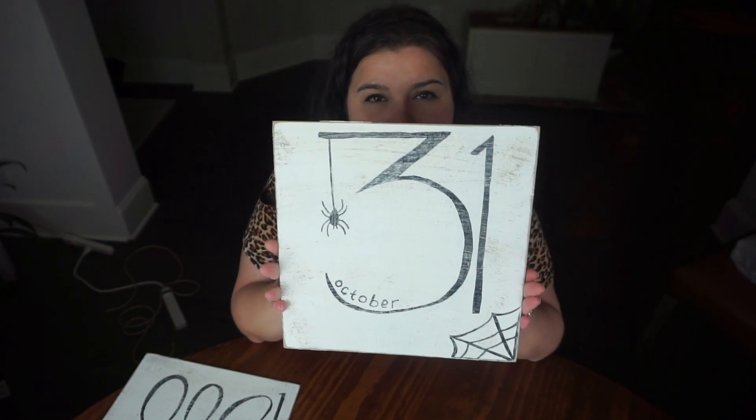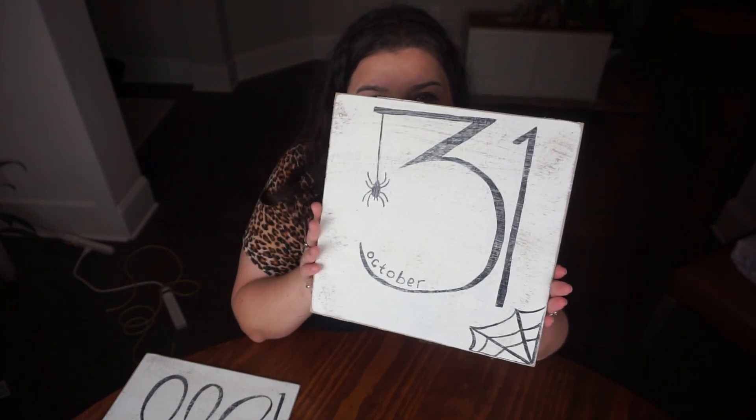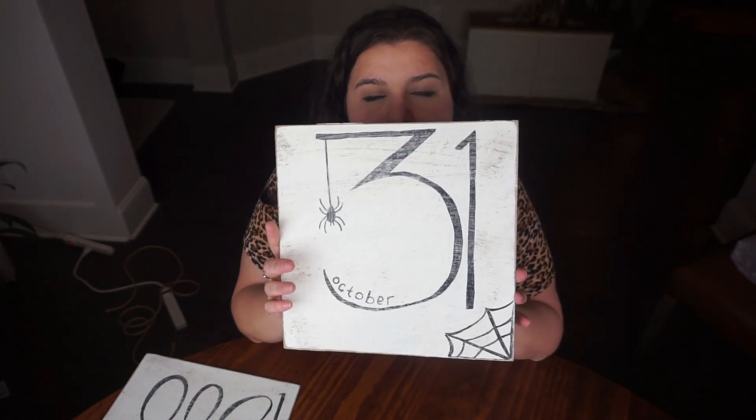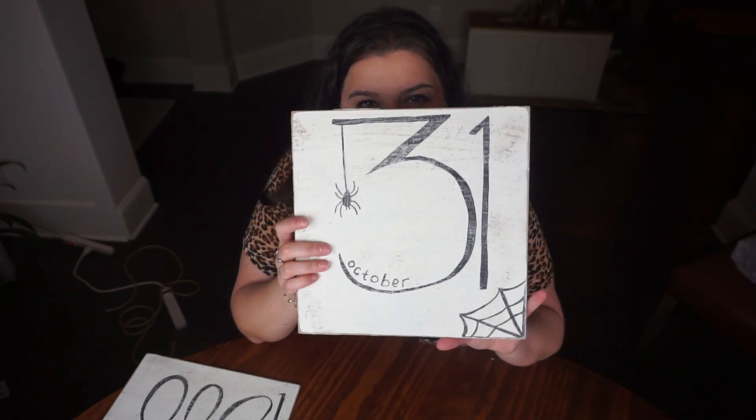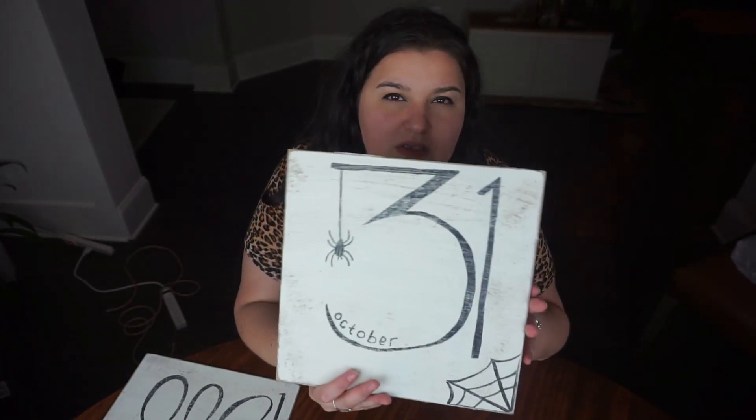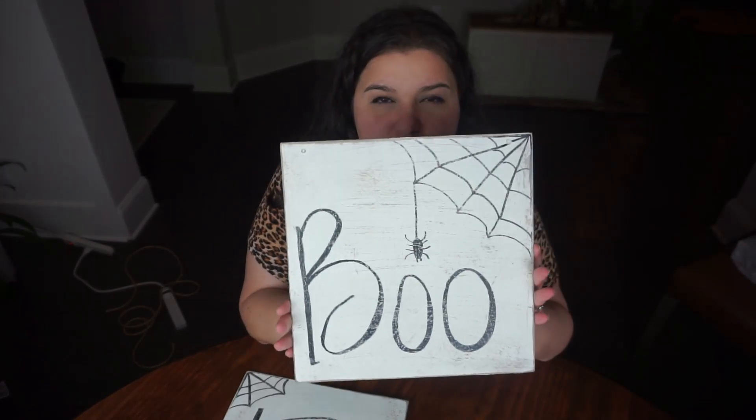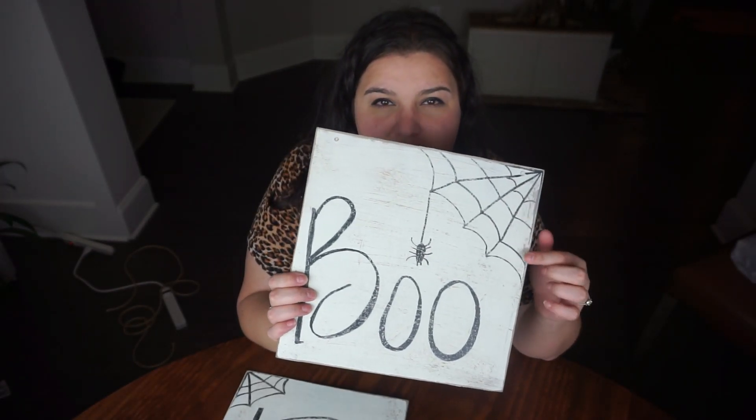This is the first one and it just says October 31st. It has a little spider web and I distressed it. I thought it looked really cute, very kind of spooky farmhouse look. The other one is the same style and it just says boo with a spider web on it.